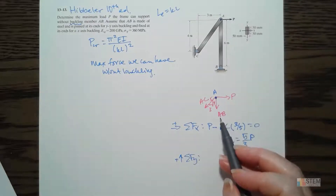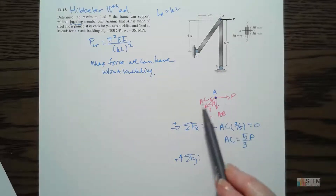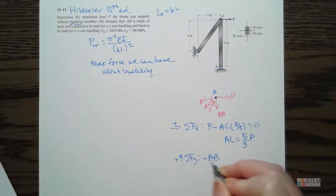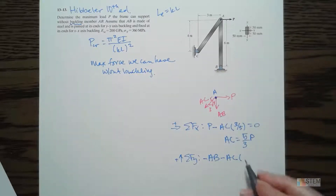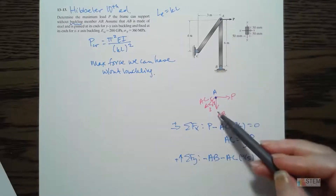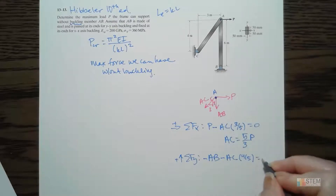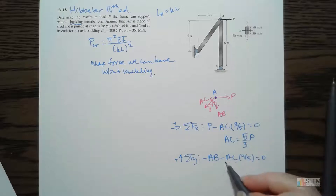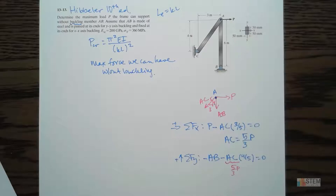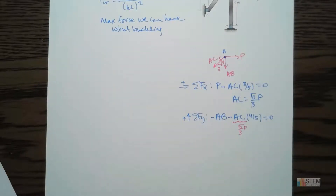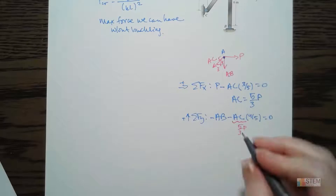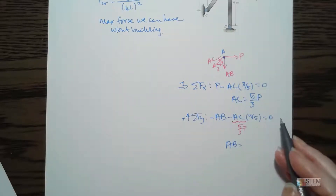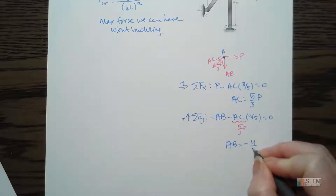Now for the Y components to find AB. We have negative AB minus AC times (4/5) equals zero. The Y component uses 4 over 5, because 4 is parallel to the Y axis. Plugging in AC = 5/3 P, the 5s cancel, giving 4/3 times P. Moving it over, AB equals negative 4/3 P.